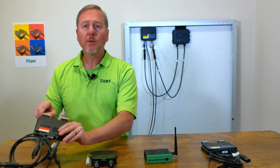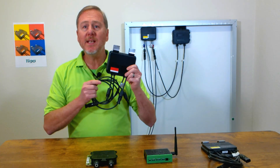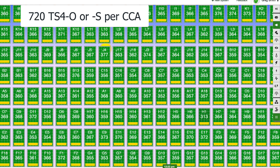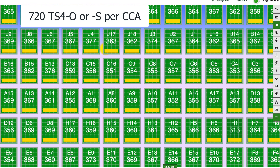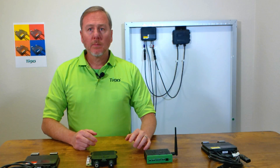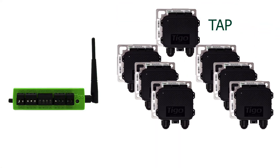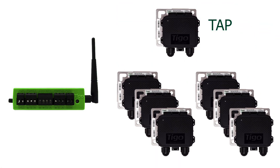Up to 720 TS4s, either S or O, can communicate with a single CCA, and the CCA can connect up to seven Tygo access points, or TAPs.